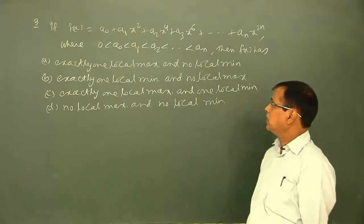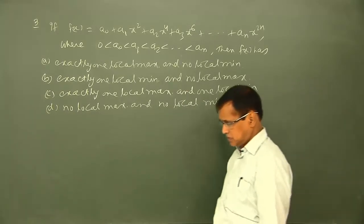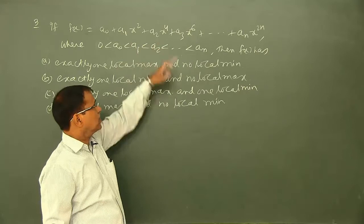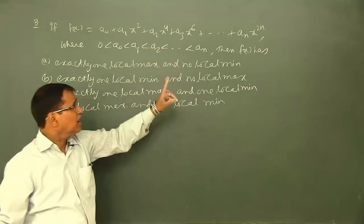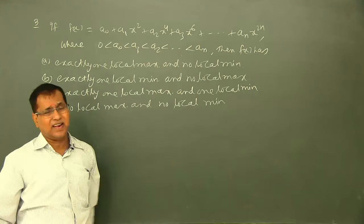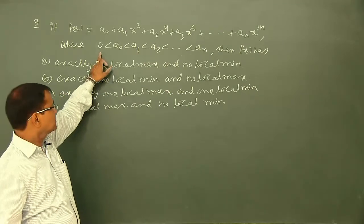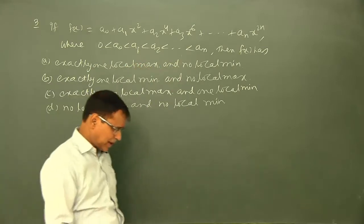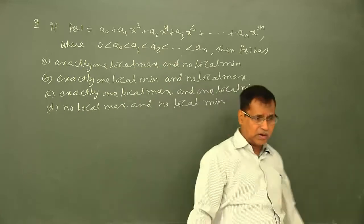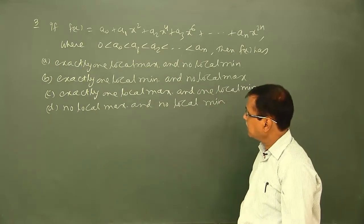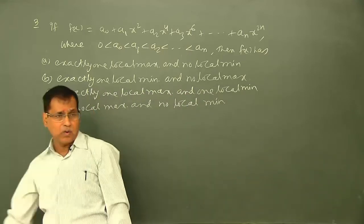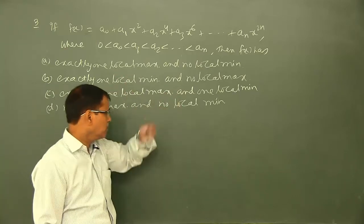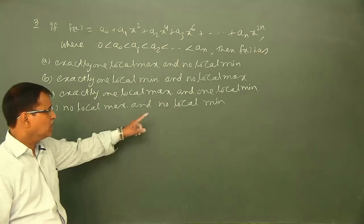The next problem: if f(x) is equal to a₀ plus a₁x² plus a₂x⁴ plus a₃x⁶ and so on plus aₙx²ⁿ, where 0 < a₀ < a₁ < a₂ < ... < aₙ, then f(x) has: exactly one local maximum and no local minimum; exactly one local minimum and no local maximum; exactly one local maximum and one local minimum; or no local maximum and no local minimum.